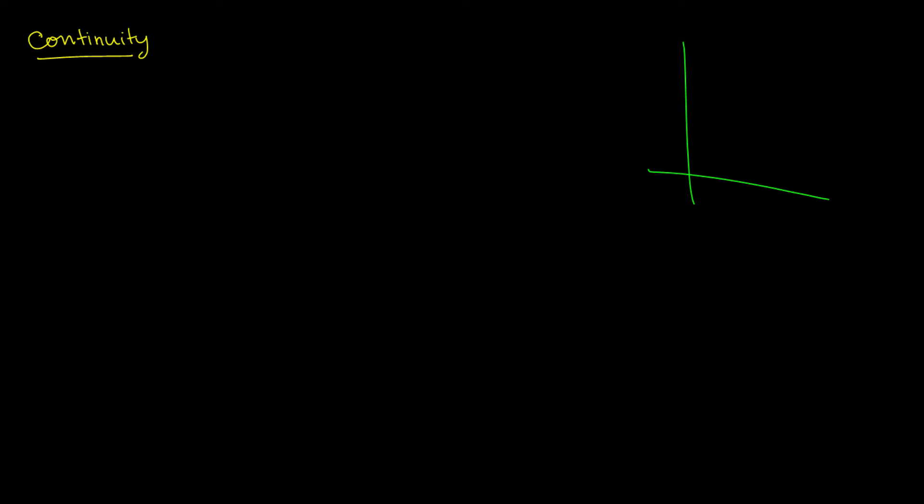In this video, we're going to talk about continuous functions, also known as continuity. A continuous function is essentially a function on a graph that you can draw without lifting your pen off the ground. It's a very informal definition of continuity, but it's sufficient enough for you to get the general idea of what we're talking about here.